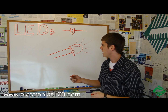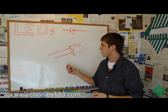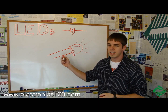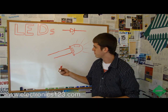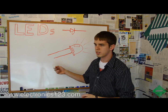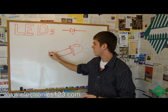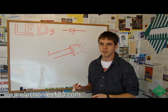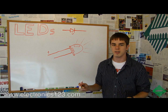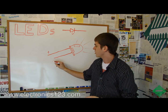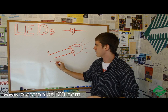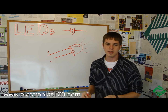Usually you can tell the difference by the length of the leads. In most cases, the longer lead is the positive, or the anode, and the shorter lead is the negative, or the cathode.